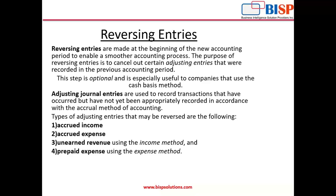Prepaid expense means a future expense that is paid in advance. After the benefits of the asset are realized over time, the amount is recorded as an expense. Examples include prepaid rent, prepaid insurance, and advertisement. It is initially an asset for the company, and over time, when you utilize the benefit of that asset, you expense it out. Accrued is the opposite of prepaid: prepaid expense is shown as an asset, and accrued is shown as a liability.